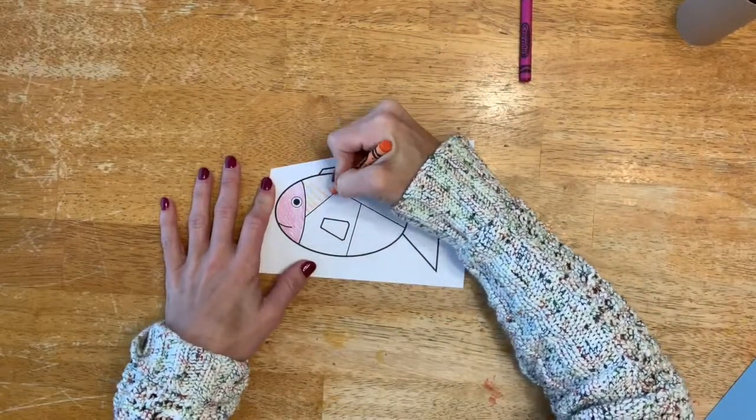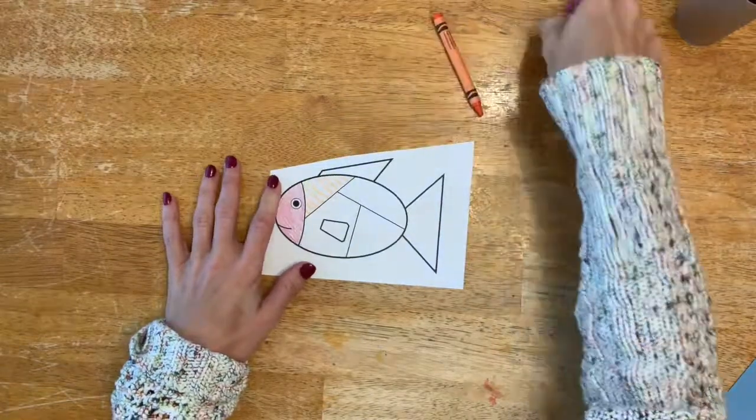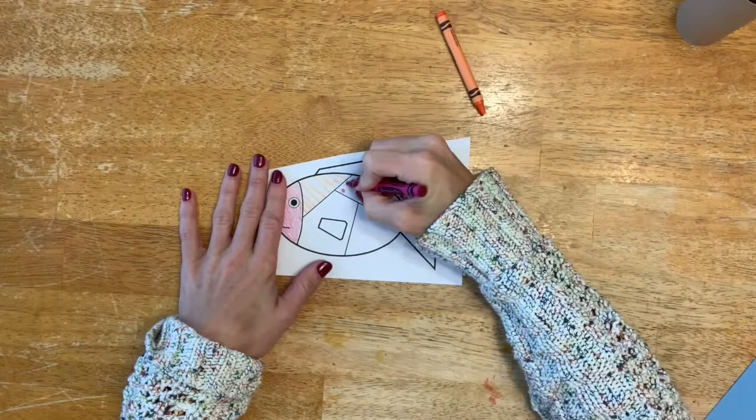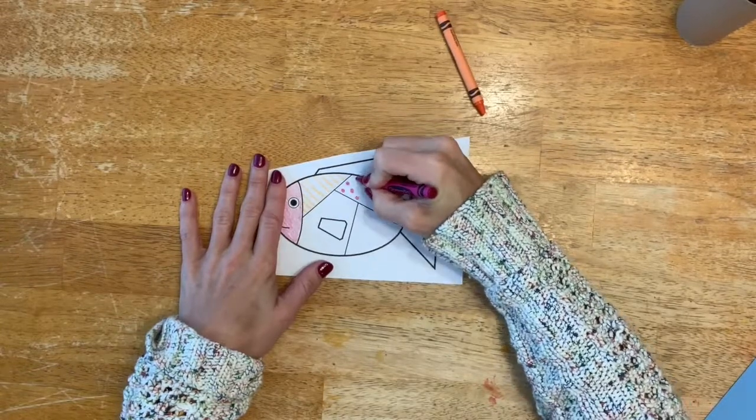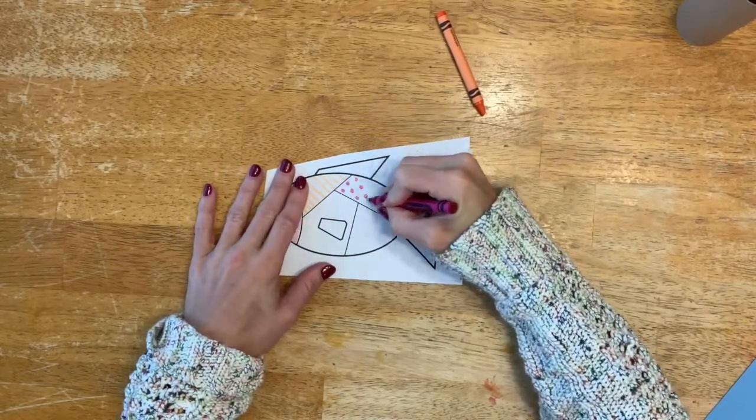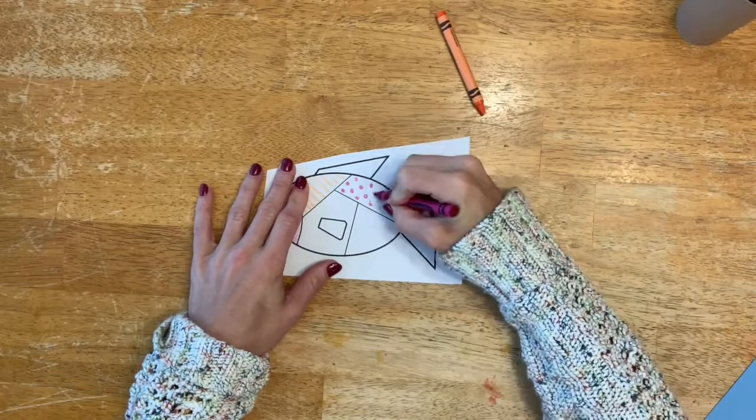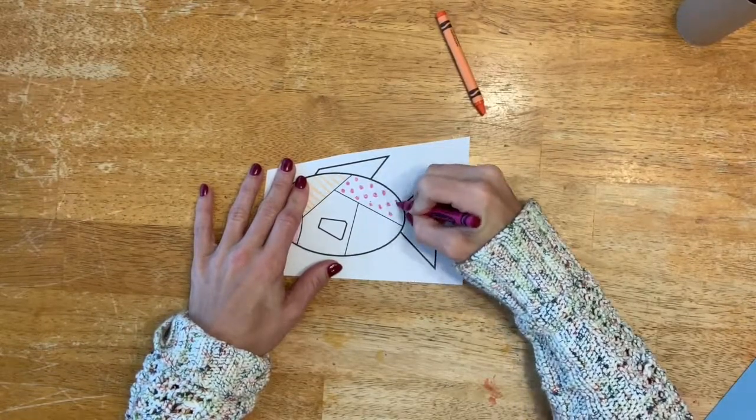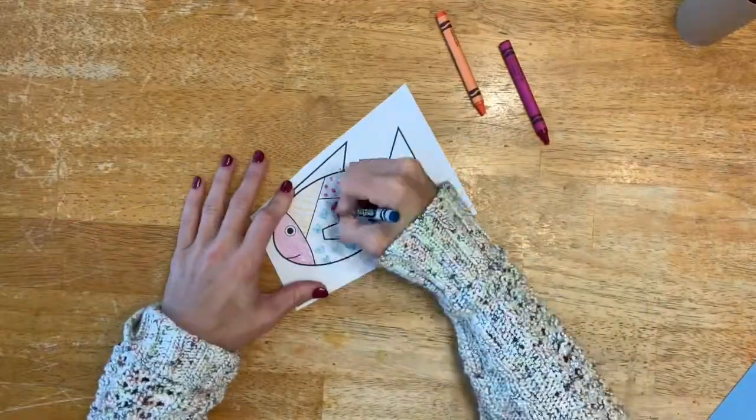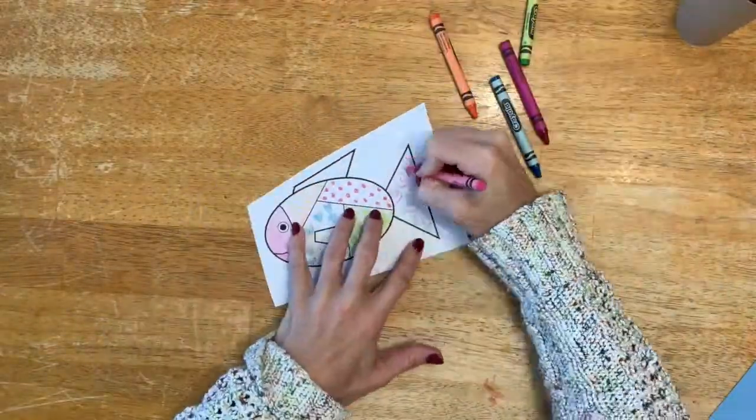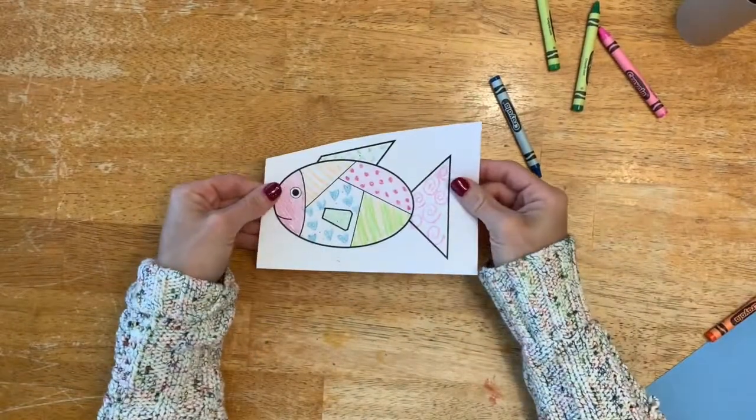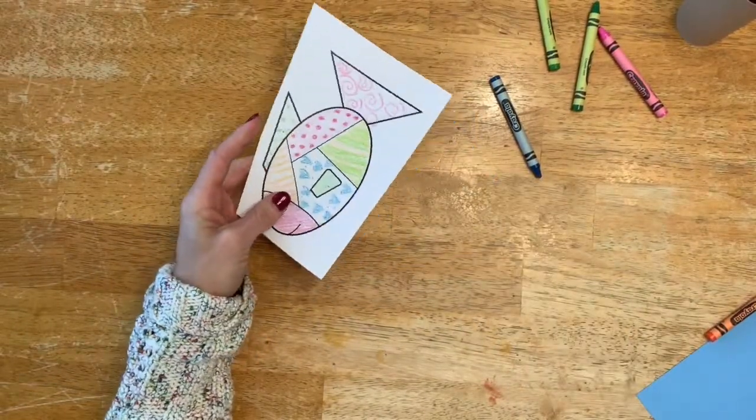That's fine. And then in the others they want to do patterns, so you could remind them they can do stripes, just simple patterns, and they can do polka dots. So they're going to fill in each section of this fish with different patterns.